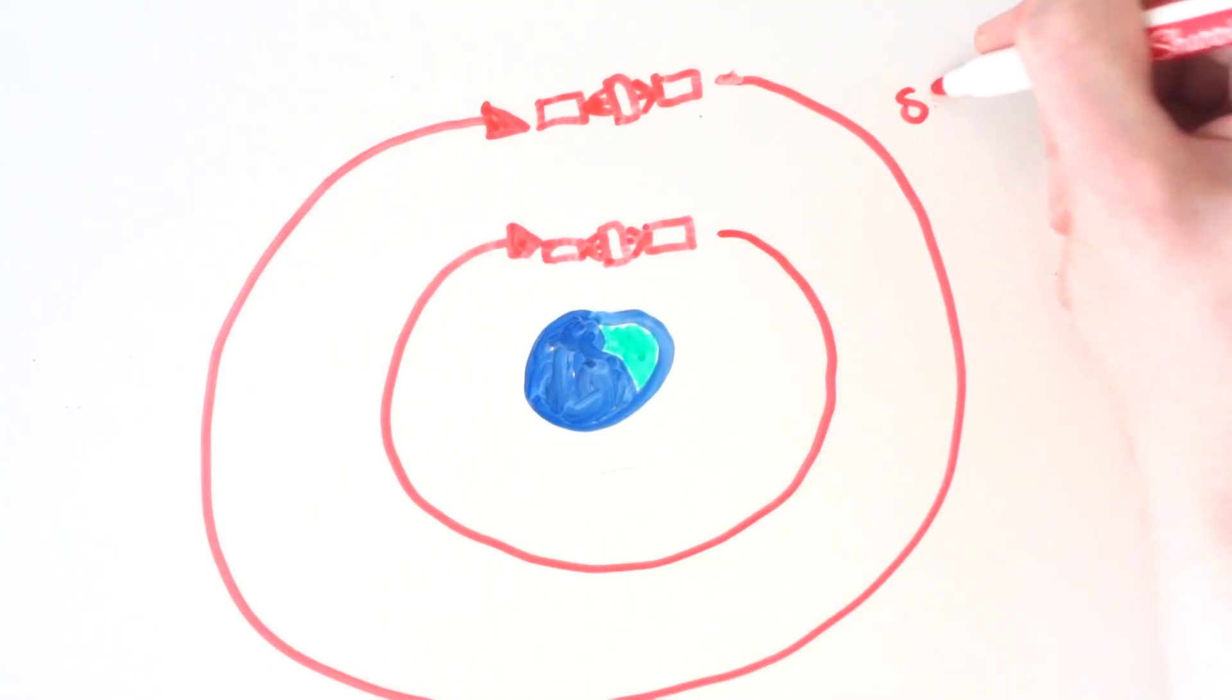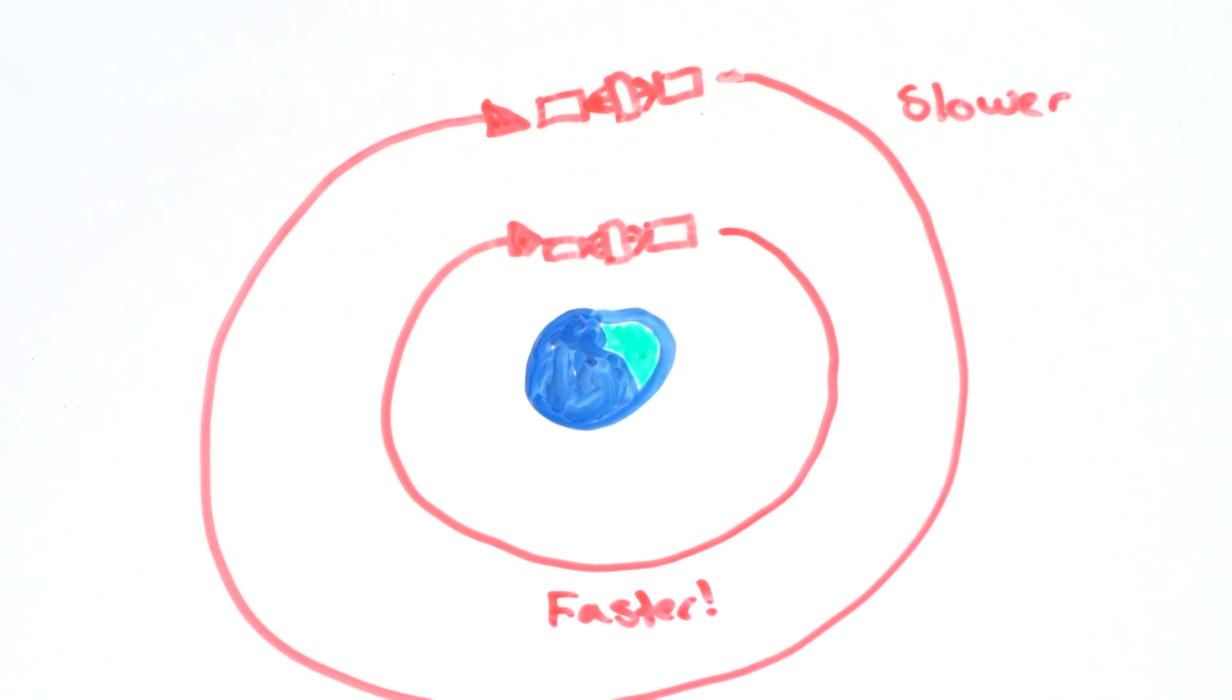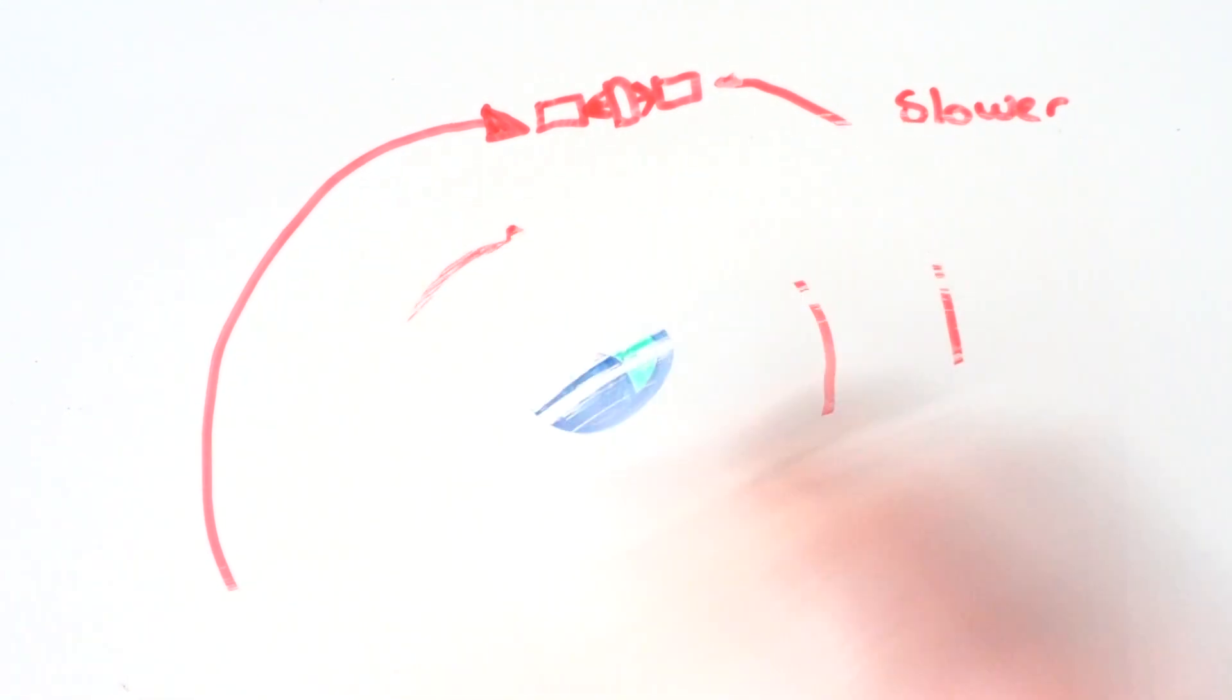The higher the altitude of a satellite, the slower it can travel to orbit Earth. This is due to there being less gravity attracting you to Earth, the further away you get from Earth. That's why the Moon, which is our only natural satellite, travels much slower than the International Space Station and the GPS satellite.